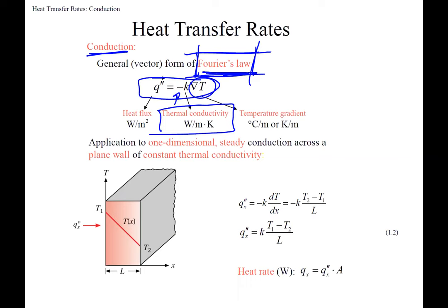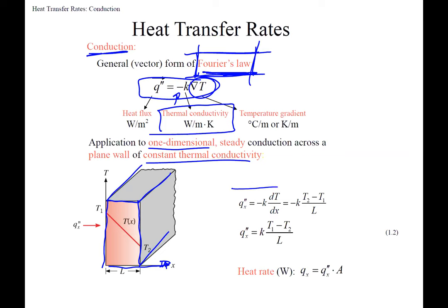Simplifying to a plain wall with one-dimensional heat transfer in the x-direction, assuming steady state and constant thermal conductivity, Fourier's Law becomes: q-double-prime equals negative k times dT/dx. For two- or three-dimensional cases, you'd also have dT/dy and dT/dz terms for the y and z directions.